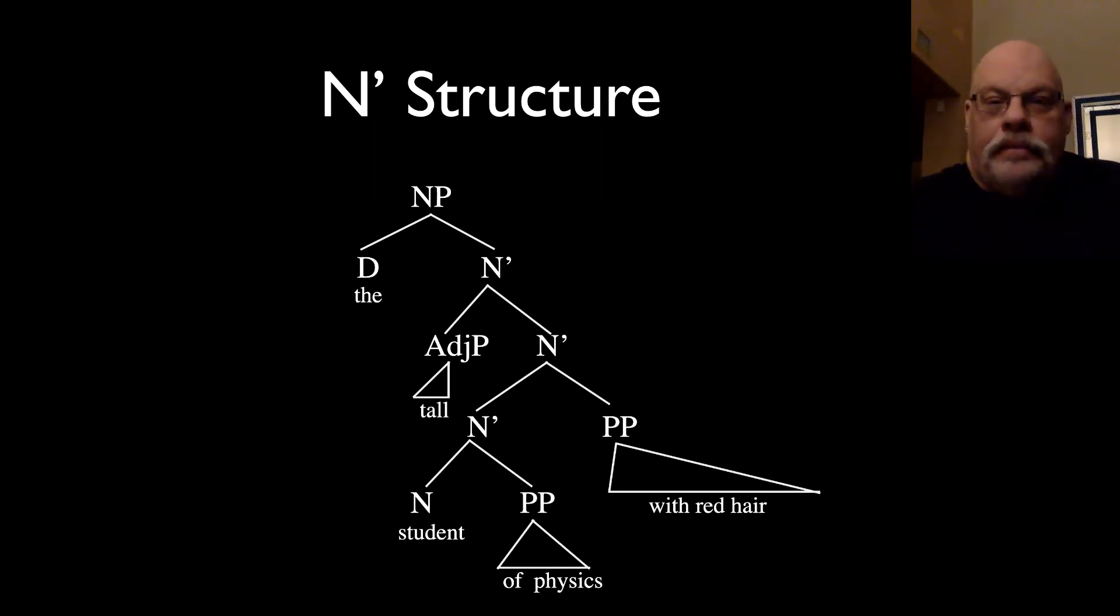But what you'll see here is we have these three N bars. The N bars are intermediate structure inside of our noun phrase. And our modifiers, tall, of physics and with red hair, are each attached into the structure. Now, in order to do this, we're going to have to modify our rules.